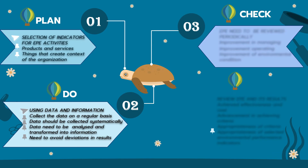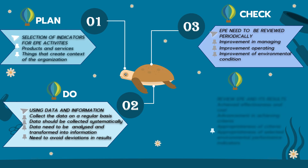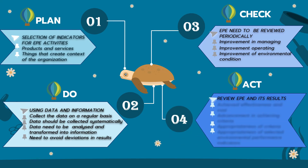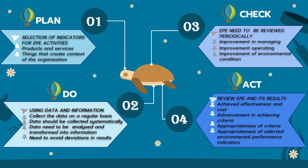Reviewing and Improving the EPE. The EPE of the organization and its results must be reviewed periodically to identify possibilities for improvement. This review can contribute to the actions of management toward improvement in managing and operating the organization, and to the improvement of environmental conditions. Act. Phases in reviewing the EPE and its results can include: reviewing achieved effectiveness of environmental protection and its cost; advancement in achieving criteria of environmental protection; appropriateness of criteria of environmental protection; appropriateness of selected environmental performance indicators; sources of data, methods for collection of data, and quality of data. Once you have all this information, you can start improving your system through corrective and preventive actions.